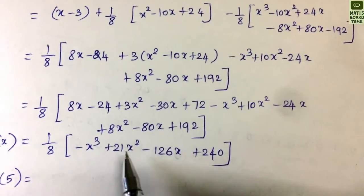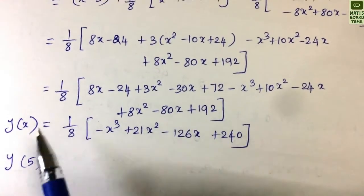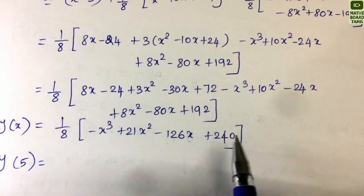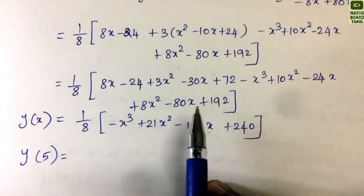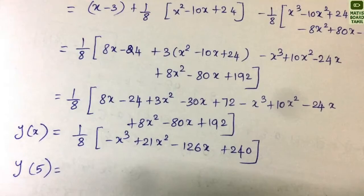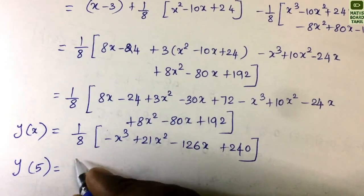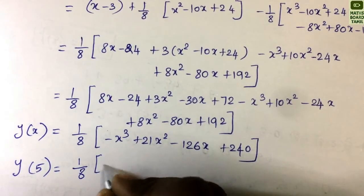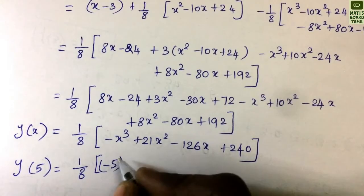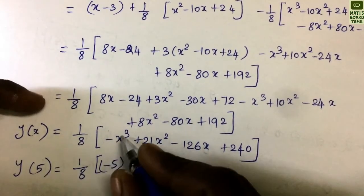After rearranging, we have y(x) as a polynomial in x with terms in x³, x², x, and a constant. We then evaluate at x=5: y(5) = (1/8) into [−(5)³ + ...]. This gives us the final value of f(5).